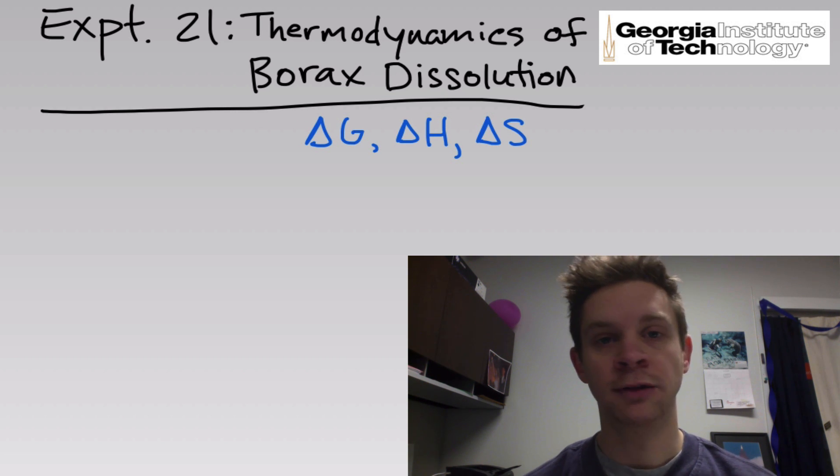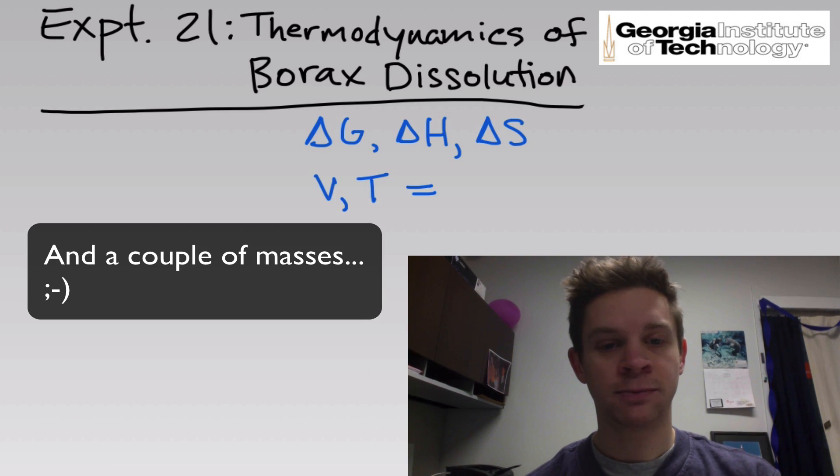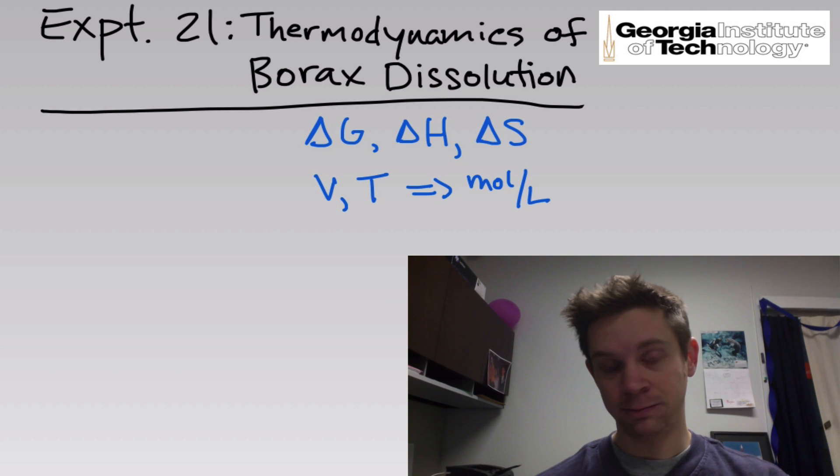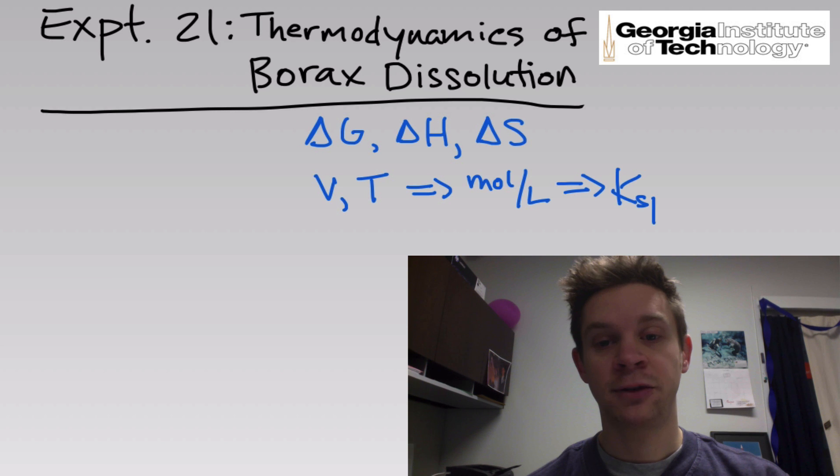We're interested in these three quantities for this process of dissolving sodium borate in water. One of the amazing things about this experiment is that to determine these theoretical parameters, all we need to measure ultimately are volumes and temperatures. The things we'll be measuring are volume and temperature. That's going to lead to concentrations in moles per liter, and these will be equilibrium concentrations, meaning that we can determine from there Ksp, or the solubility product equilibrium constant, and from Ksp we can get back to delta G, delta H, and delta S for the process.